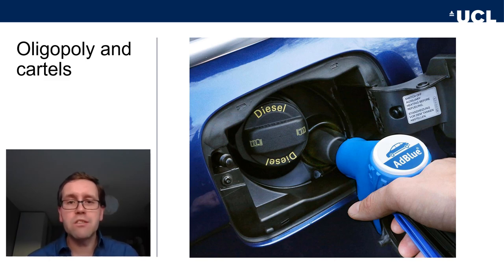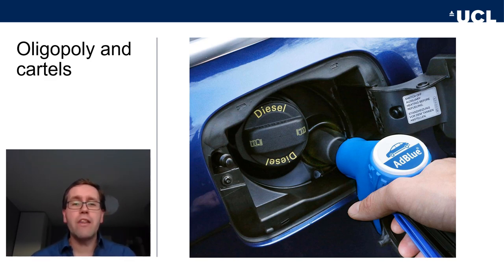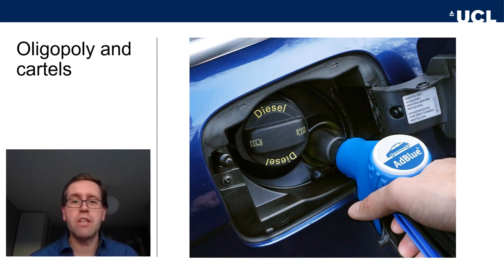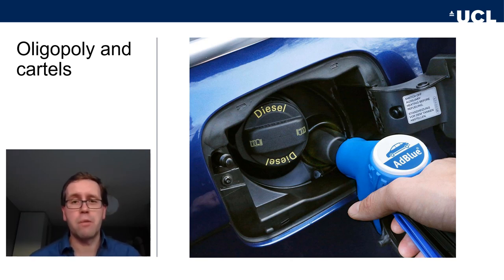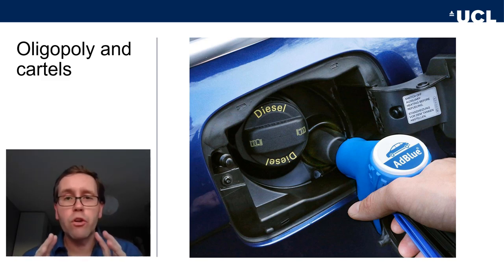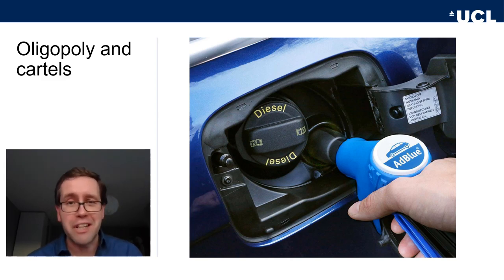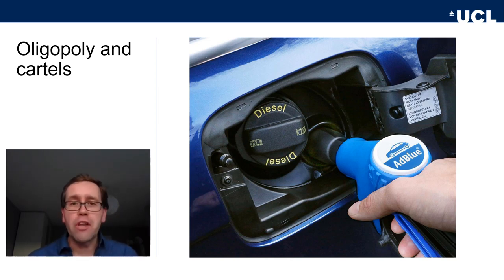One of the reasons this all came out relates to the AdBlue tank. These tanks in the cars are really quite small and don't hold enough liquid to clean emissions for long periods of time, meaning people would have to refill constantly. Car manufacturers were aware that consumers wouldn't like this. So instead of truly competing on who could produce the cleanest diesel SUV, the car manufacturers colluded — their engineers met and discussed the size of the AdBlue tanks.